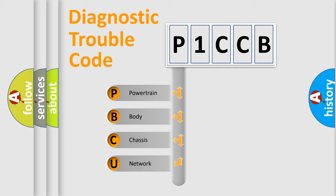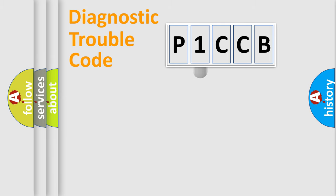We divide the electric system of automobiles into four basic units: Powertrain, Body, Chassis, and Network. This distribution is defined in the first character code.